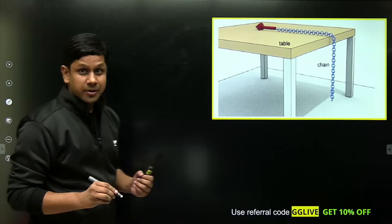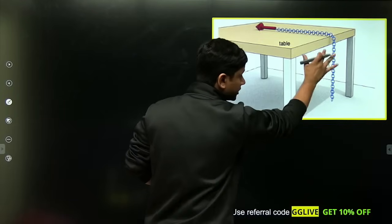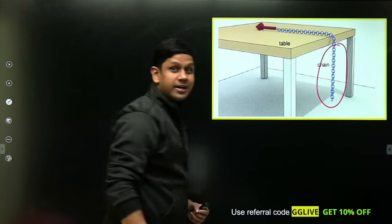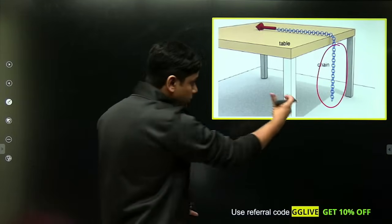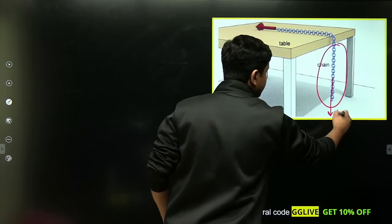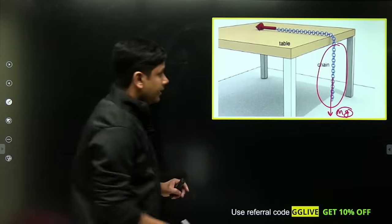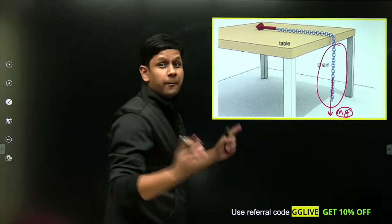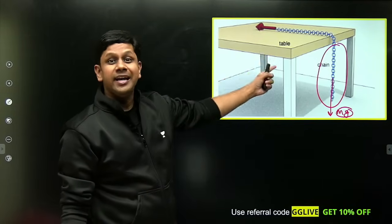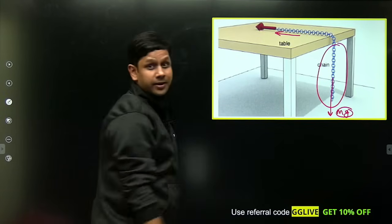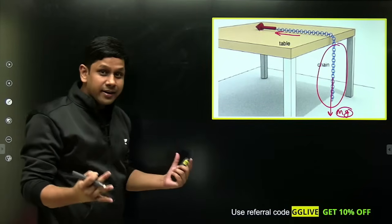See, the chain wants to come down because the hanging portion is trying to pull it down. This weight wants to bring it down, so there will be some mg formula. This is trying to bring the chain down, but the friction acting between table and chain will try to keep the chain on the table itself.